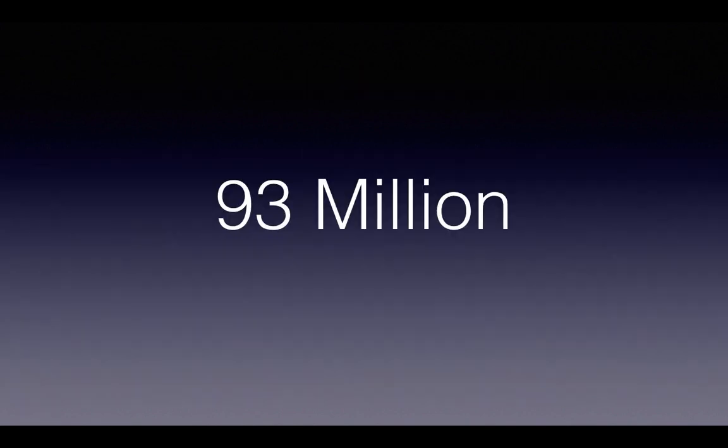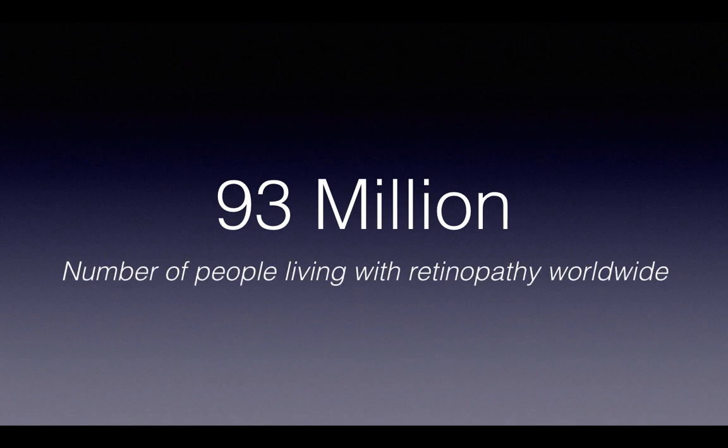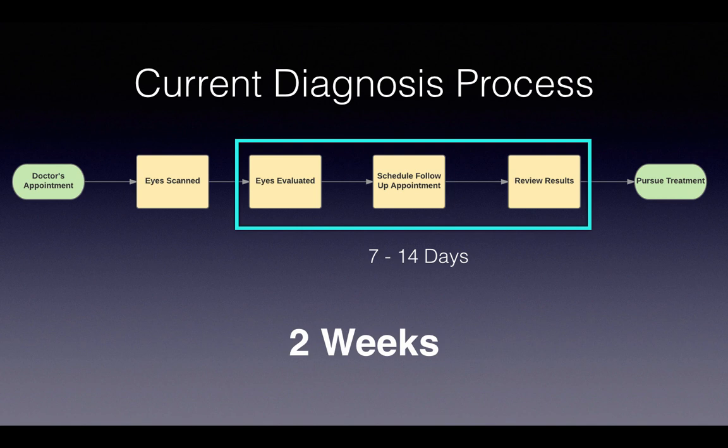The number I want to start with is 93 million — a significant number because it's the number of people that live with diabetic retinopathy worldwide. The current diagnosis process is still really long, even in 2017. You have to go to your doctor and get your eyes scanned, but the ophthalmologist looks at and classifies the images by hand. Due to doctor-patient confidentiality, you can't disclose results over the phone, so you have to come in for a follow-up appointment whether you have retinopathy or not.